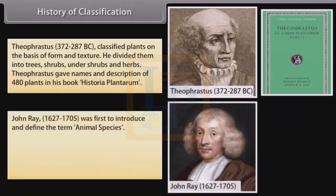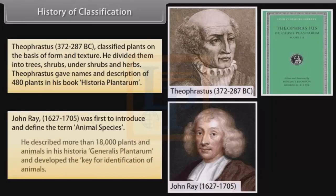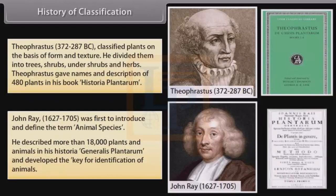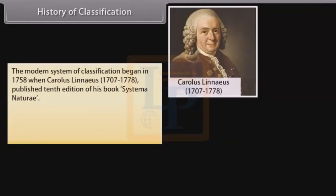John Ray (1627–1705) was the first to introduce and define the term animal species. He described more than 18,000 plants and animals in his Historia Generalis Plantarum and developed a key for the identification of animals.